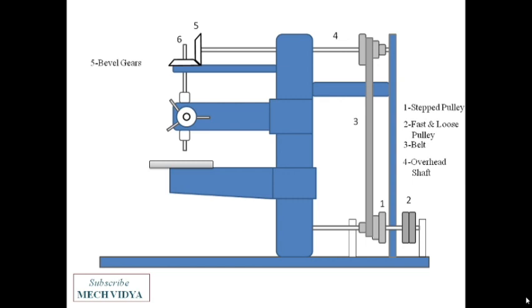So to summarize, first the bottom shaft rotates which in turn rotates the overhead shaft 4. This in turn rotates the drill spindle through the bevel gears and finally the drilling is done on a workpiece.